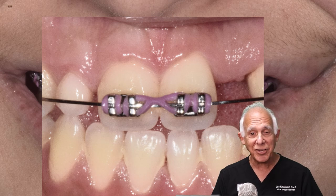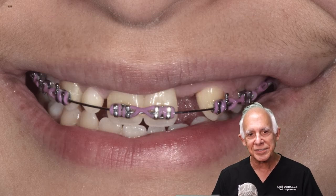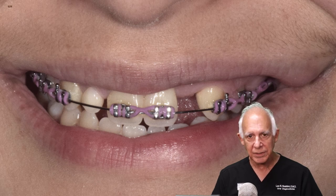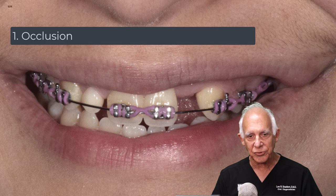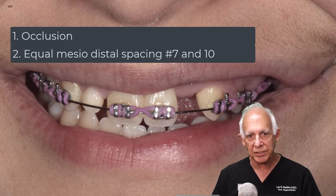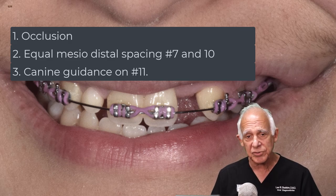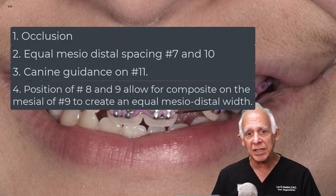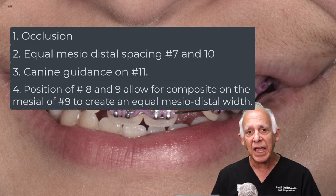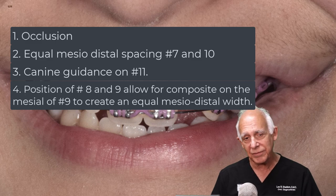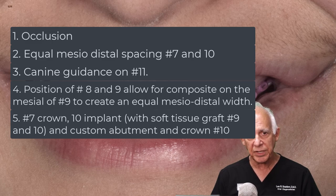She has a low smile line, so that's not as much of a consideration, but later on we can certainly put in a soft tissue graft. So what are we going to ask the orthodontist to do? Number one: get these teeth into occlusion. Number two: equal spacing in the number seven and number ten pontic areas. Number three: canine guidance, which is part of getting the occlusion. Number four: position eight and nine such that we can restore number nine with a simple composite on the mesial — or mesial and distal — to make tooth nine look like tooth eight. Finally, we'll put crowns on number seven and an implant on number ten.